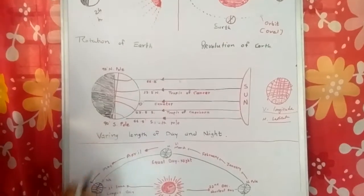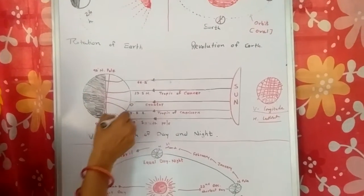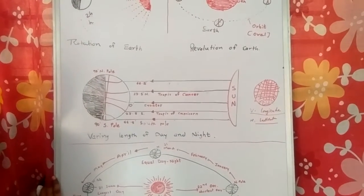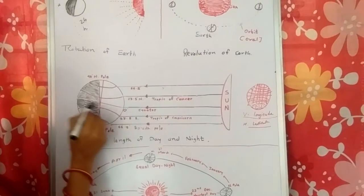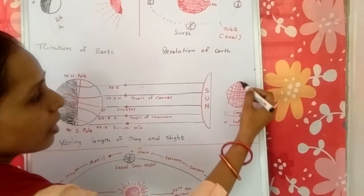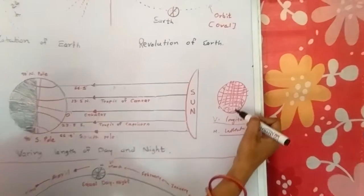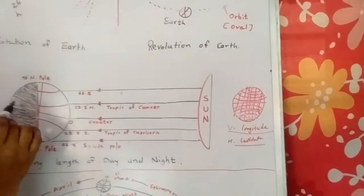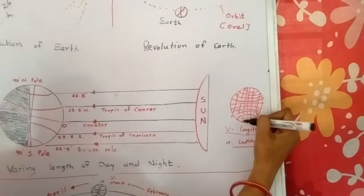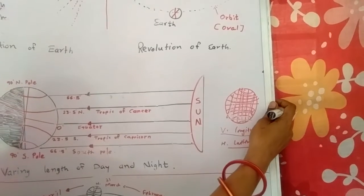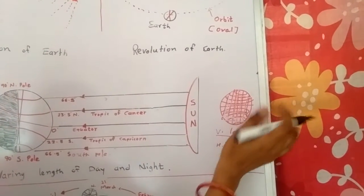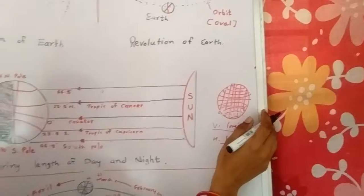Now you can see this figure — this is the picture of the earth. You can see lines on the earth. There are some imaginary lines on the earth; I have drawn some of them here. But there are 181 imaginary lines on the earth.